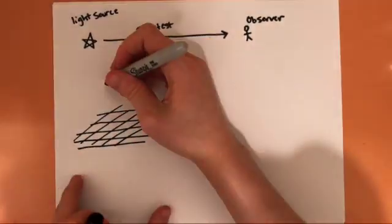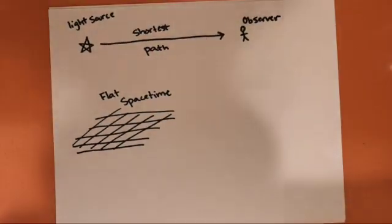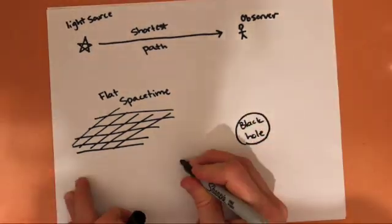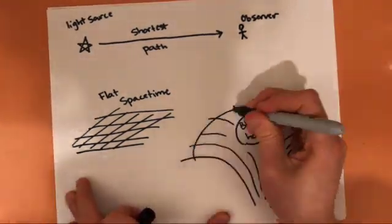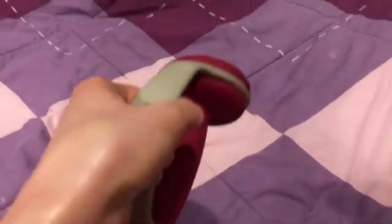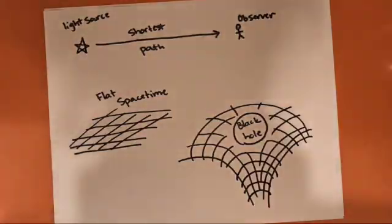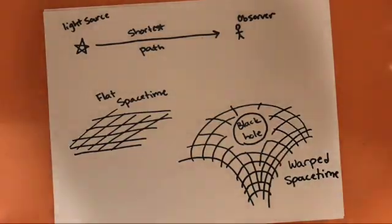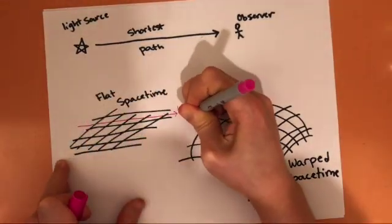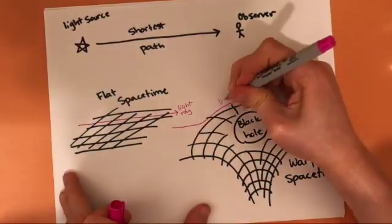Curved geometries and geodesics aren't just seen on our three-dimensional planet. They're also seen all the time in the cosmos due to the four-dimensional curvature of space-time. Light rays traveling through space always travel the shortest possible distance between two points. In flat space, these light rays would travel along straight lines like we're used to. But massive objects like stars and black holes have enough gravity to curve the fabric of space-time, much like placing a weight on fabric causes it to warp. Thus, the geometry of space-time around these massive objects is non-Euclidean, so light rays that pass nearby will travel on curved geodesic trajectories.